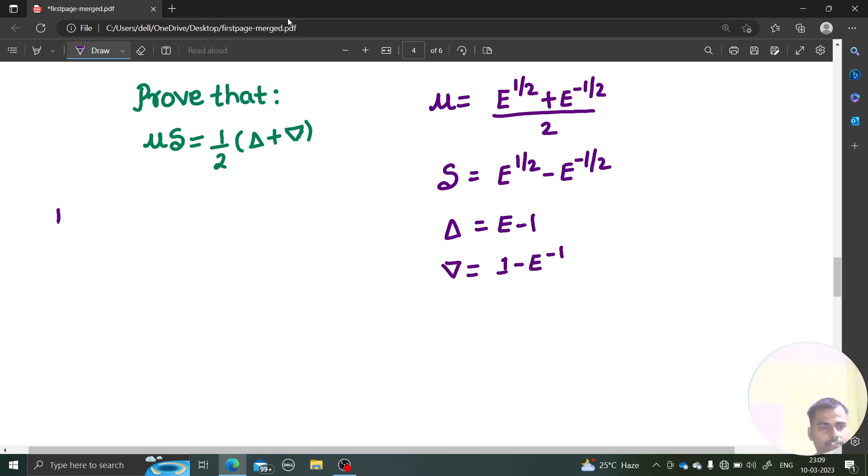Let's start with your LHS portion. Your LHS is mu times delta. Mu, you know, is e power half plus e power minus half divided by two, and what is your delta? That is e power half minus e power minus half.